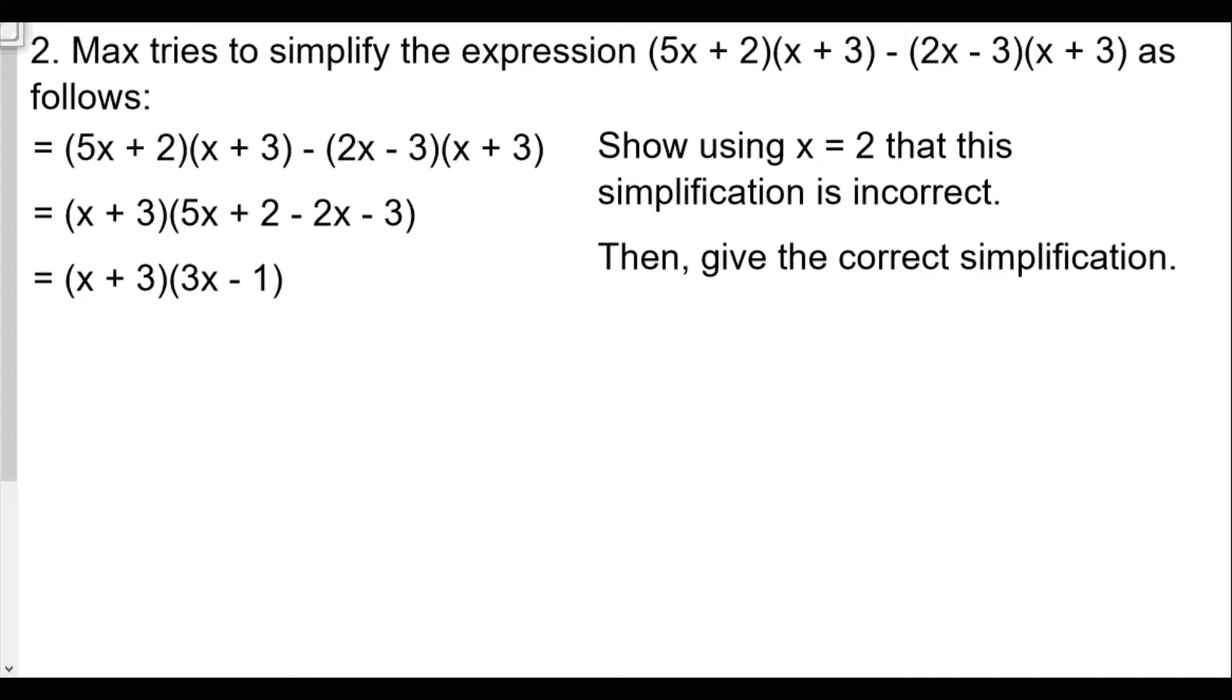Question number two begins with Max tries to simplify the expression (5x + 2)(x + 3) - (2x - 3)(x + 3) as follows. He definitely sees here that they both have (x + 3) as one of the factors.